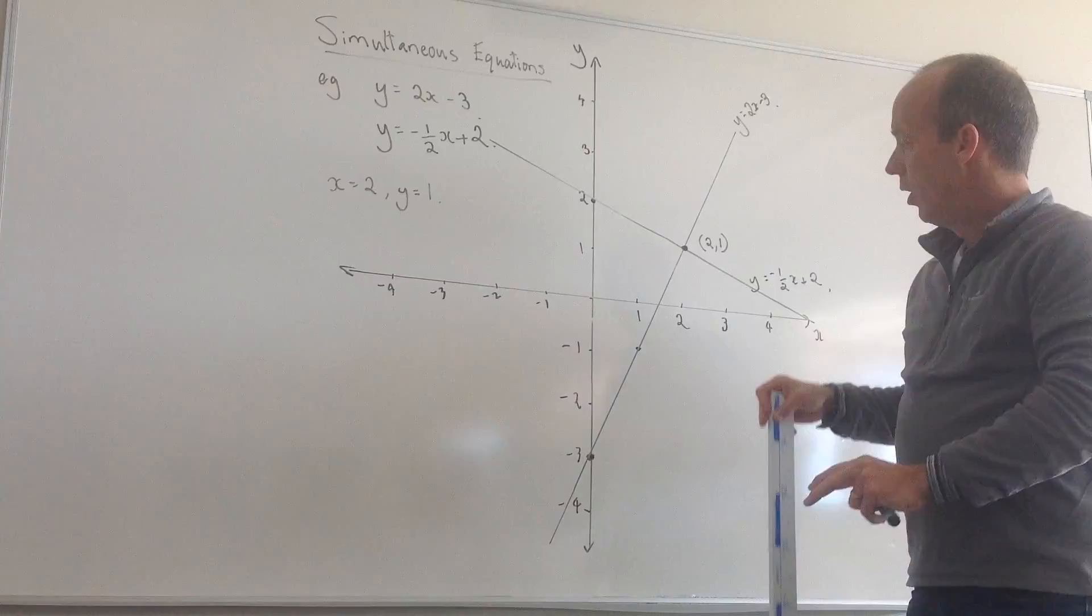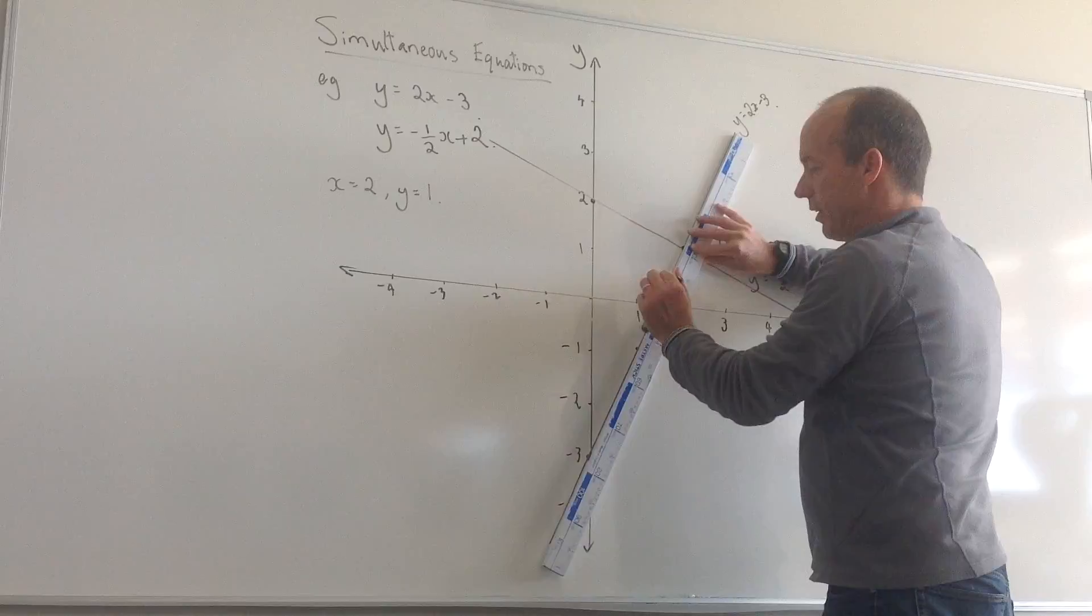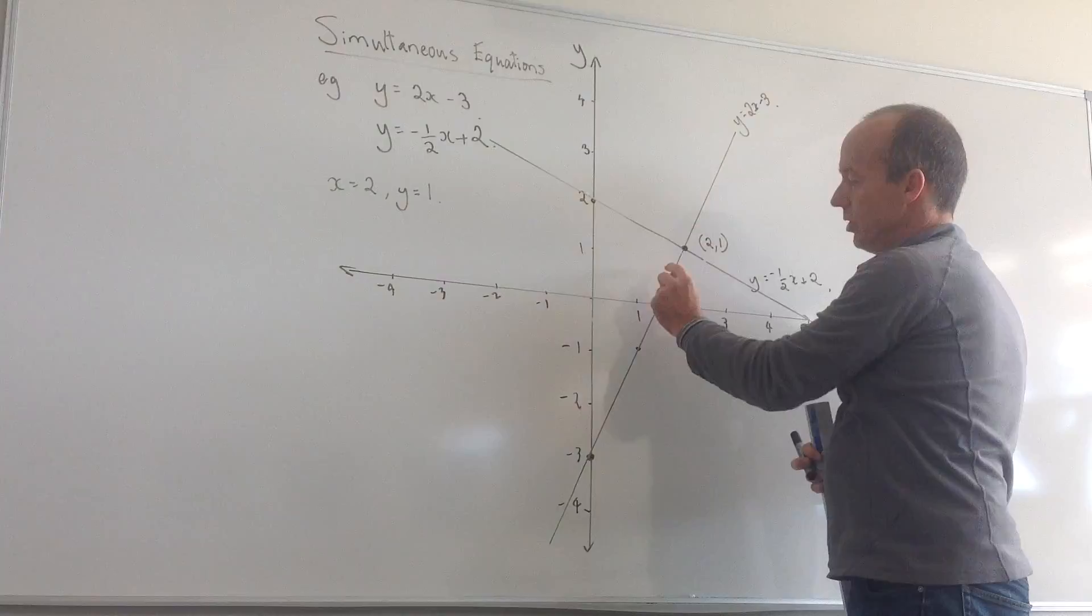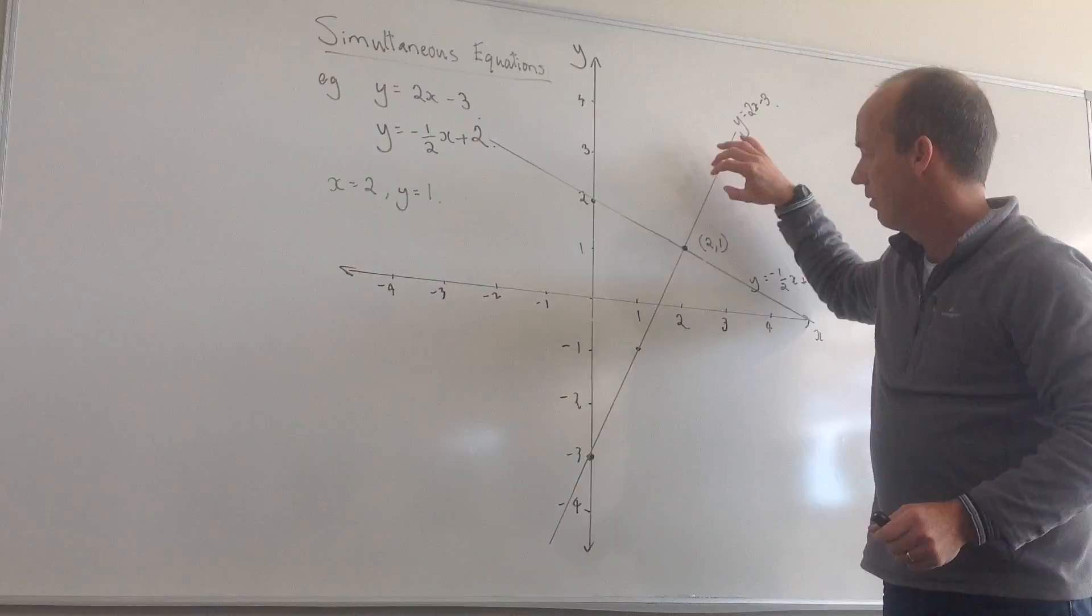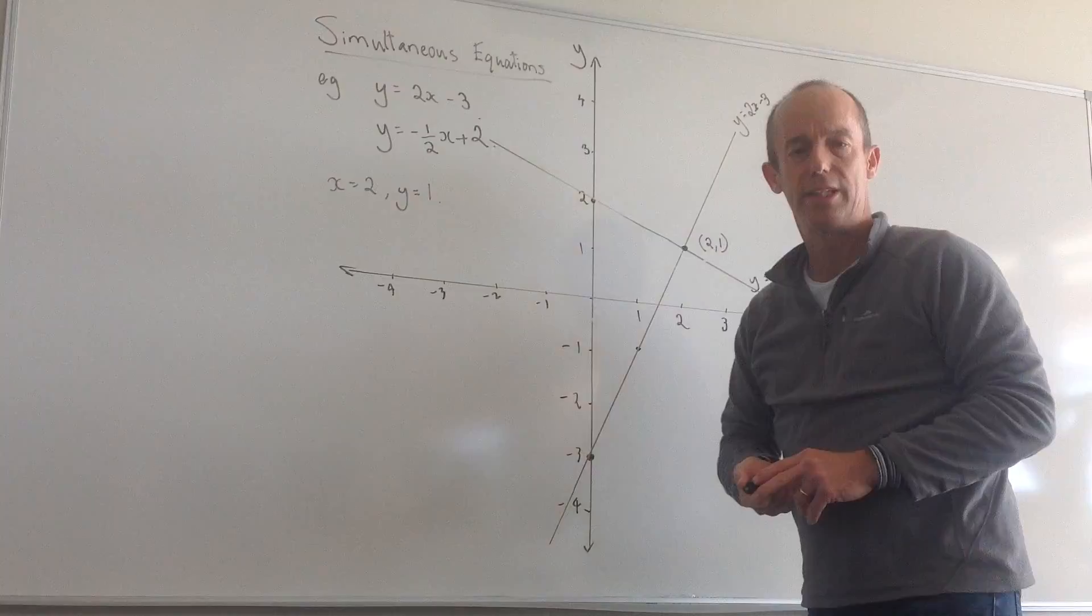Also, if the two lines end up being on top of each other, so they've got the same slope and the same y-intercept, that means there's a solution all the way along those two lines. We say there's an infinite number of solutions if the lines fall on top of each other. That's graphical solutions to simultaneous equations.